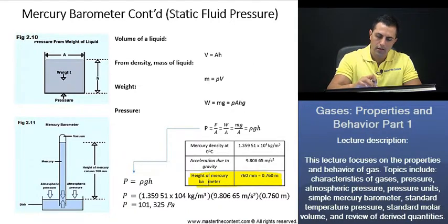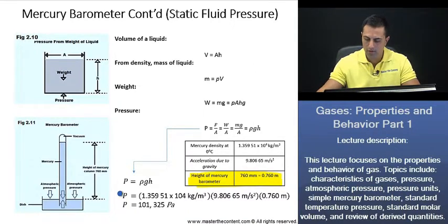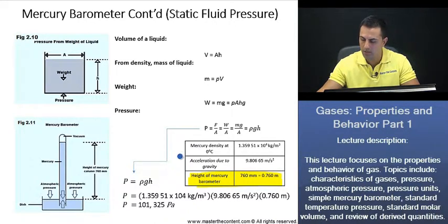And to find the pressure exerted by the mercury column, we could use the following equation. All we would need is the density times the acceleration due to gravity and the height of the mercury barometer. And we have all three values here. Now, before we actually go ahead and we take a look at the answer here, let's take a few steps back and see how we ended up here.